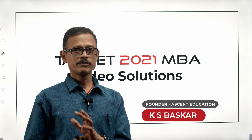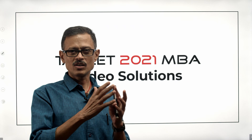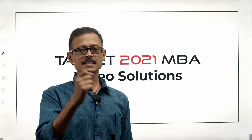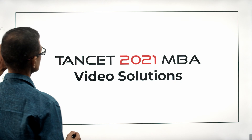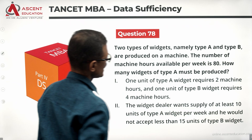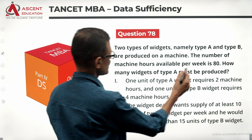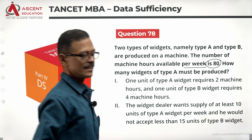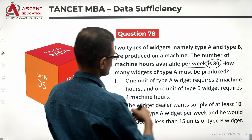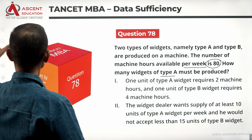This is a transit 2021 MVA equation paper order video solution. We are looking at a data sufficiency question — interesting and conceptually simple, but set as a word problem. Two types of widgets, namely type A and type B, are produced on a machine. The number of machine hours available per week is 80. The question is: how many widgets of type A must be produced?